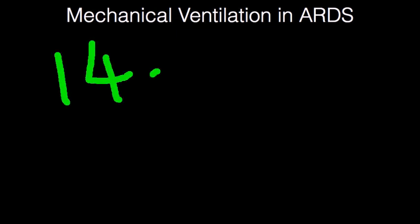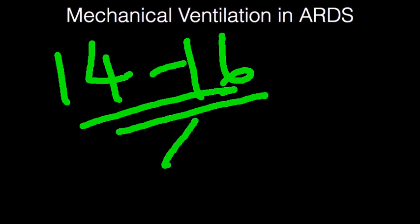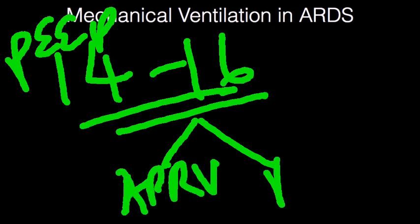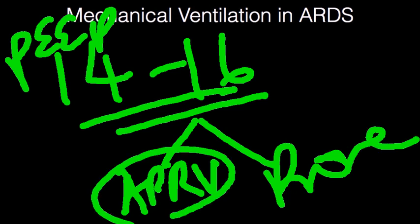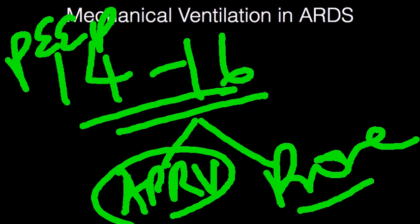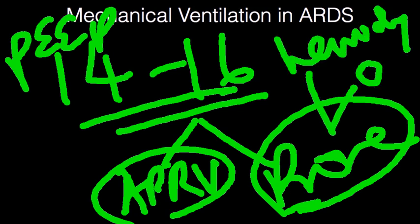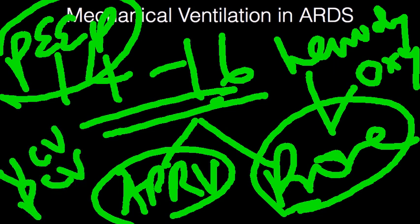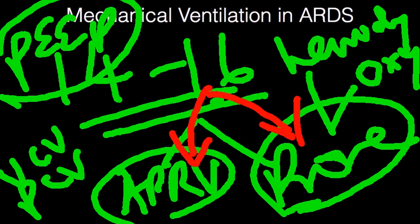When you reach a PEEP threshold of around 14 to 16, that's my cut-off point to consider moving to APRV or prone ventilation. Refer to my section on initiation of APRV for further details. Prone positioning is underused depending on institution and nursing comfort level, but it has benefits both hemodynamically and from an oxygenation perspective. Whether you're on volume control or pressure control ventilation, consider transitioning to APRV or prone positioning at that point, and you may combine both.